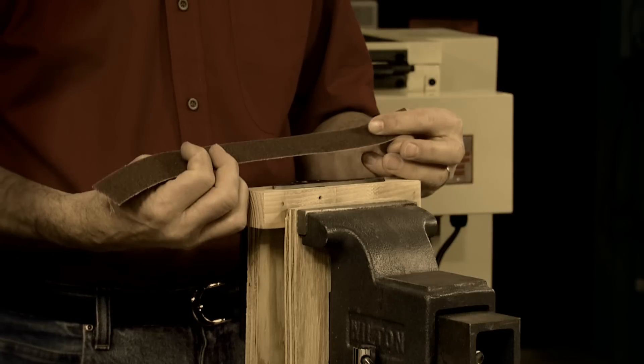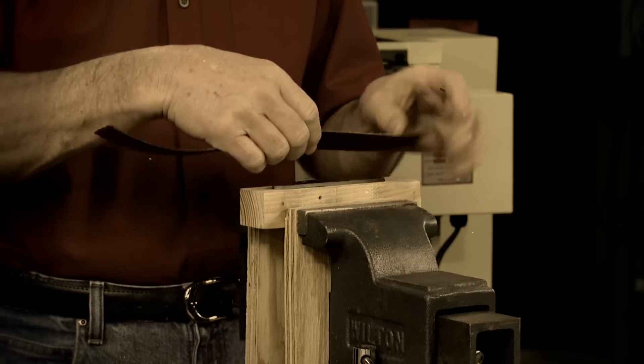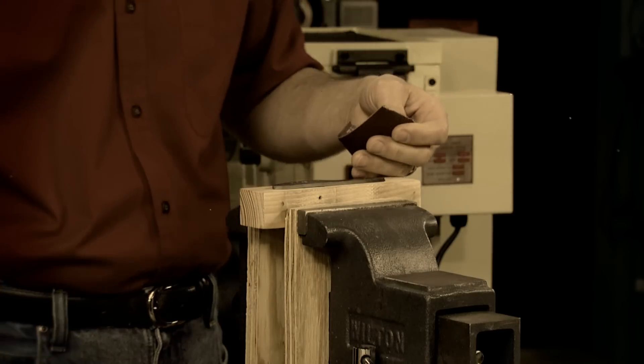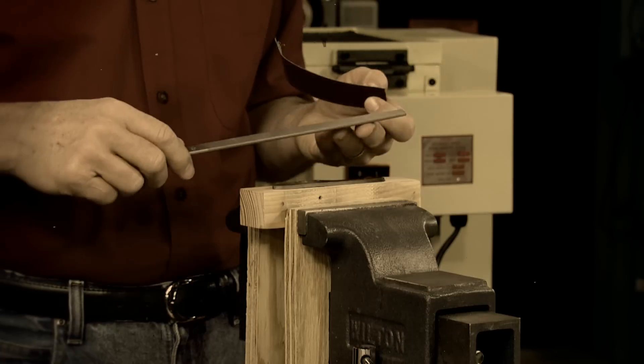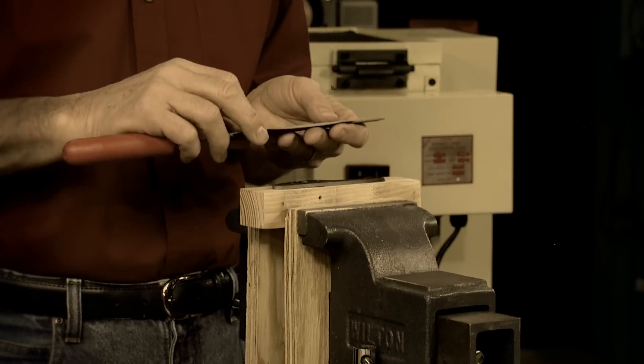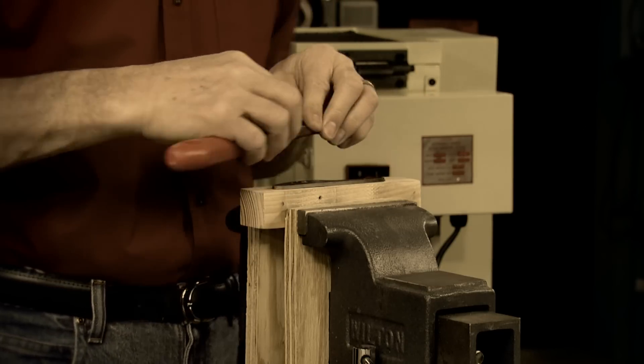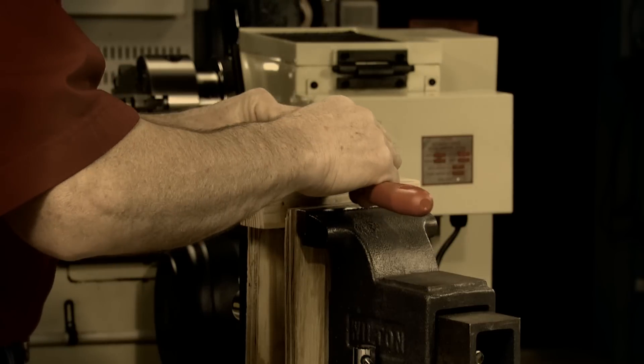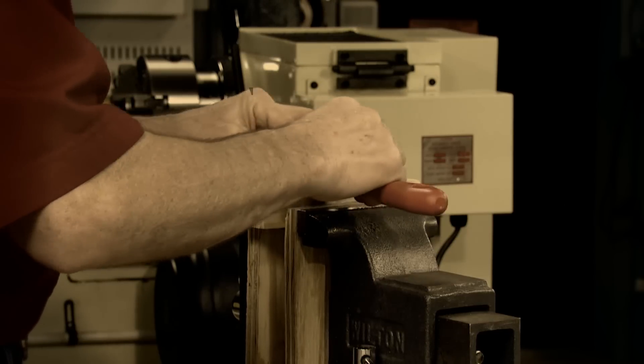The lock plates on this Parker shotgun were originally engraved with the words Parker Brothers. That engraving was removed as part of the polishing process after the metal was annealed. So I need to recut the letters as they originally appeared before we re-harden the metal.